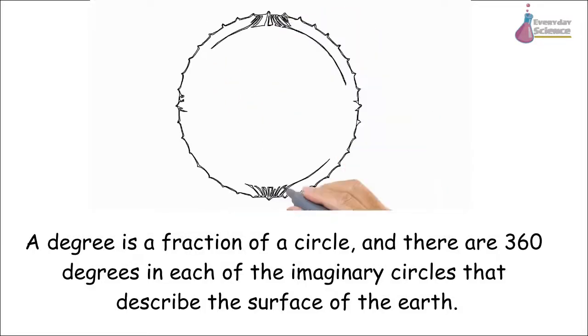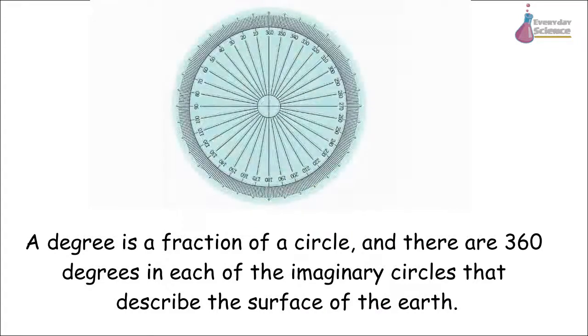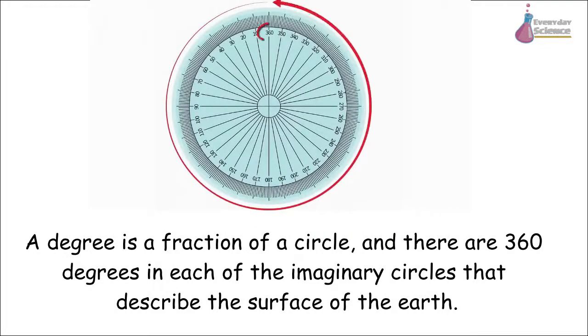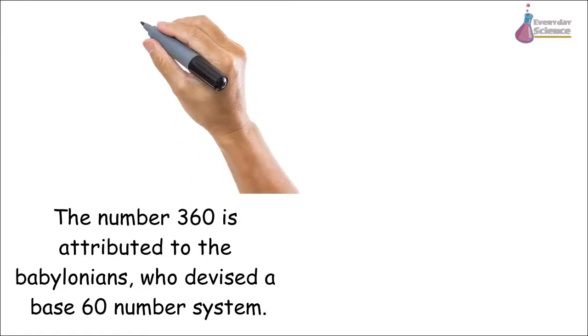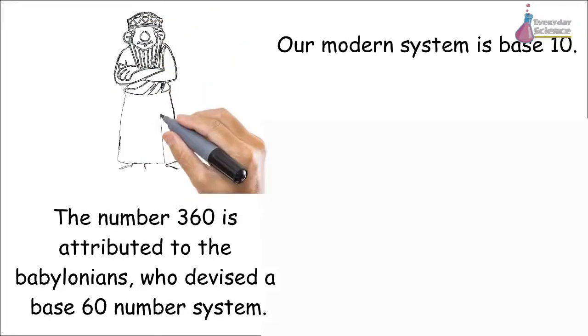A degree is a fraction of a circle, and there are 360 degrees in each of the imaginary circles that describe the surface of the Earth. The number 360 is attributed to the Babylonians, who devised a base 60 number system.